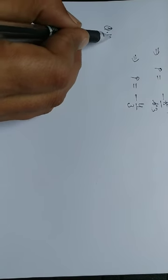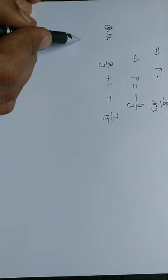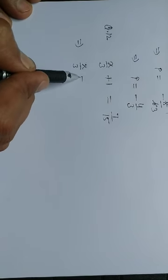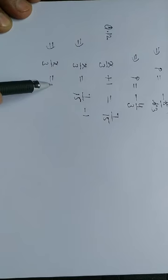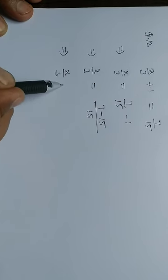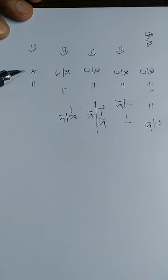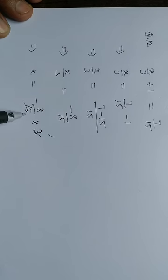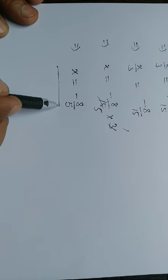Question number 12: x upon 3 plus 1 is equal to 7 upon 15. Transposing 1 to the right hand side, it becomes minus 1. Taking LCM as 15, x upon 3 equals 7 minus 15 upon 15, which is minus 8 upon 15. Since x is divided by 3, we multiply both sides by 3. So x is equal to minus 8 upon 15 into 3, giving x equal to minus 8 upon 5. This is the answer.